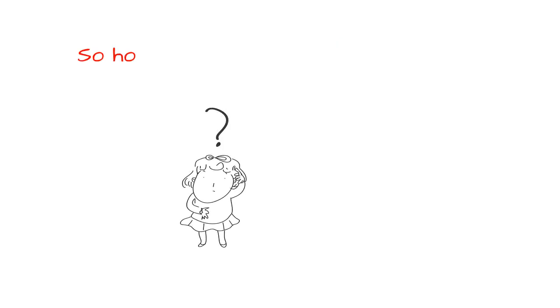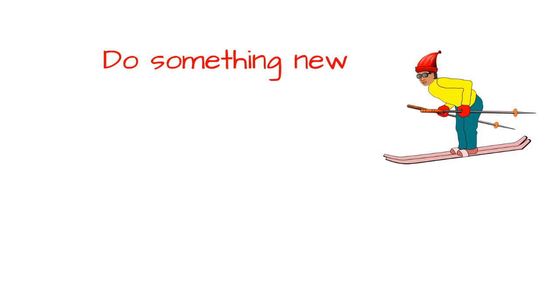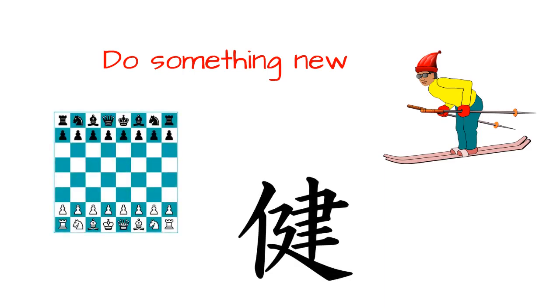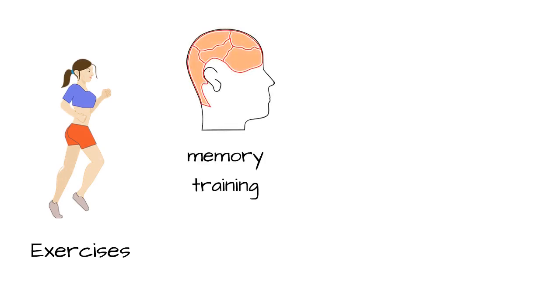So how to use your brain well? Every day, do something new. New hobbies, experiences, learning new languages, or playing chess help stimulate the brain. Exercise regularly and practice regular memory training to make your brain work better.